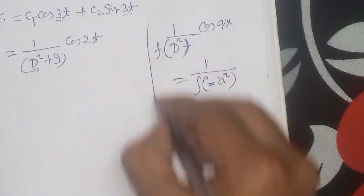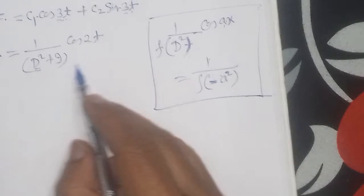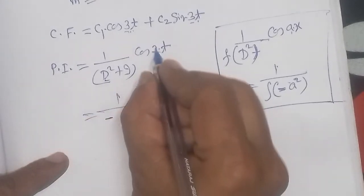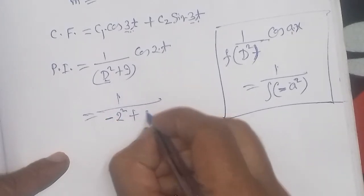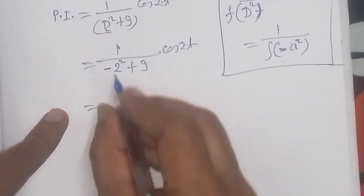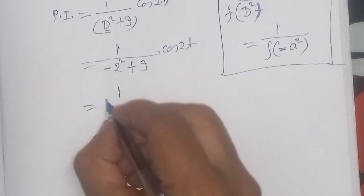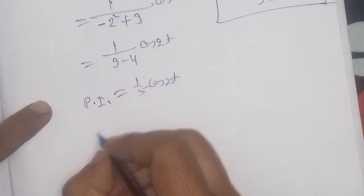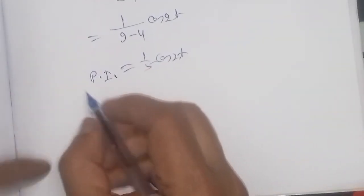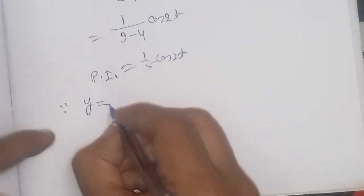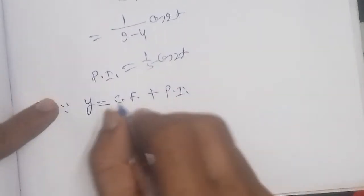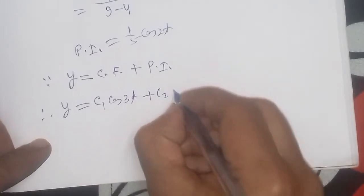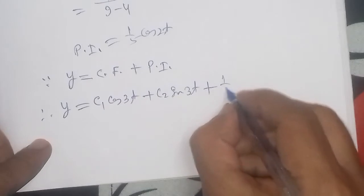Substituting D² = -4 into the denominator: PI = 1/(-4 + 9) · cos(2t) = 1/5 · cos(2t). So the particular integral is (1/5)cos(2t). The general solution is therefore y = c1·cos(3t) + c2·sin(3t) + (1/5)cos(2t).